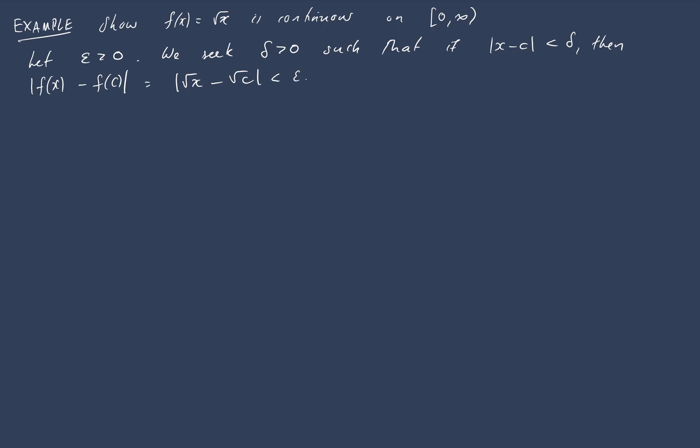So we're actually going to make this a little bit easier on ourselves. We're doing it in two pieces. First off, if c equals 0, then this inequality simplifies to square root of x is less than epsilon. So if we choose delta to be epsilon squared...